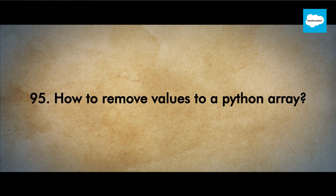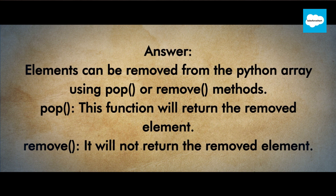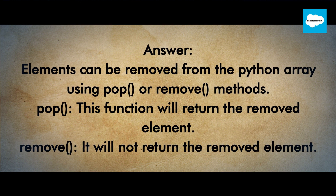How to remove values from a Python array? Elements can be removed from the Python array using pop() or remove() methods. Pop: this function will return the removed element. Remove: it will not return the removed element.